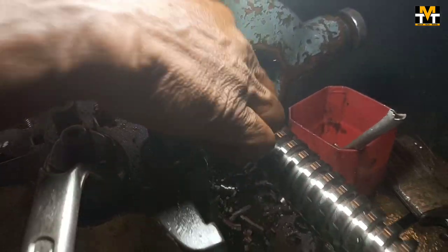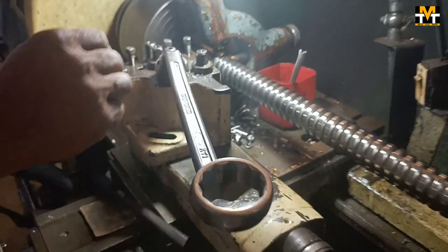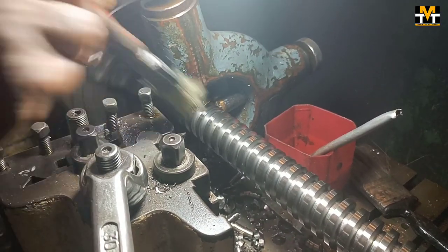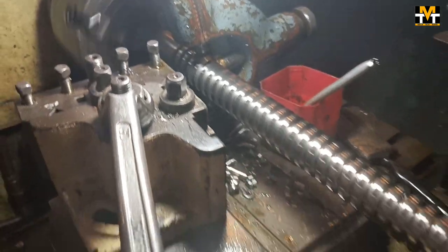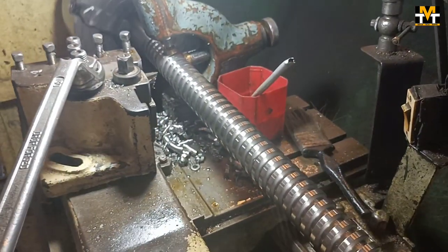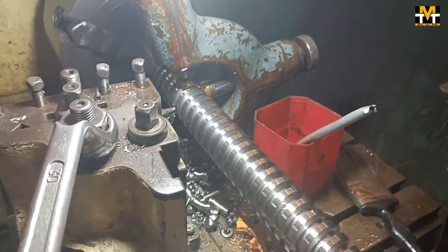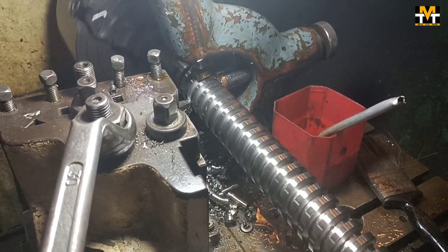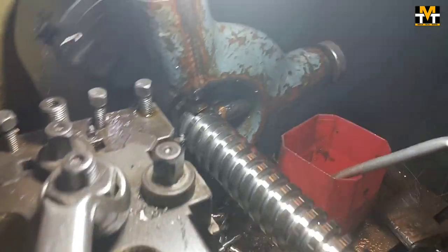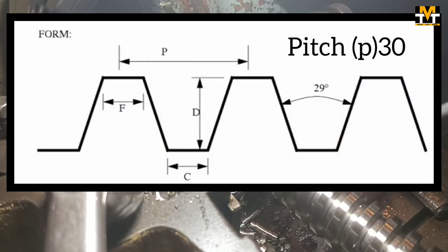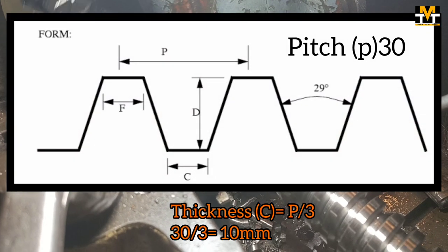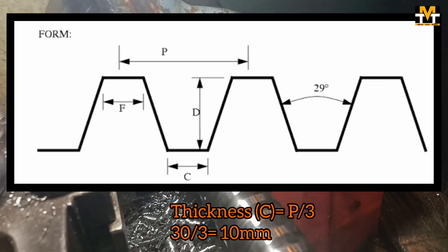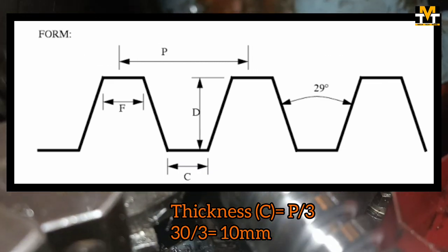We need to set the results in the methodology. We need to set the thread at 30 degrees in a thin picture. We need to set the thickness and the depth. P by 3 is simple and we will use the thickness of P by 3.